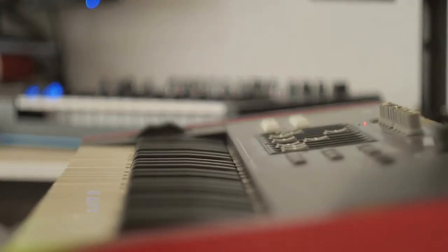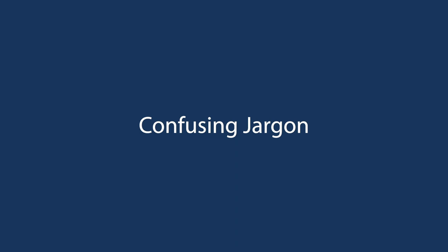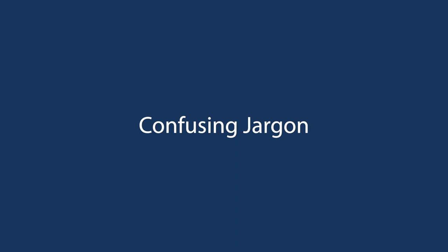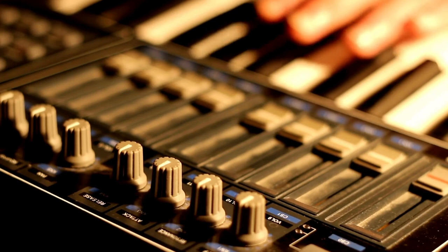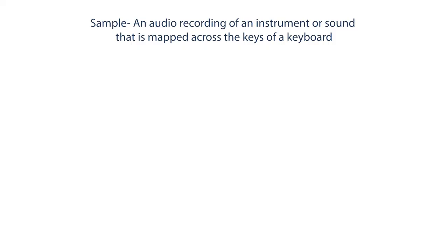Let's now have a look at the confusing jargon. First, a sample. A sample is an audio recording. In the instance of a keyboard, workstation or arranger, this is less than a second and is an audio recording of an instrument used to be played by a keyboard, workstation or arranger. These can vary from guitars, piano and drums — these are single hit samples that are mapped across the keys of a keyboard.